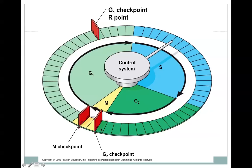One here at G2, before the cell moves into M phase, making sure that all the DNA has been correctly duplicated and everything is ready. The M phase, or the M checkpoint here, has to do with the chromosomes pulling apart correctly.